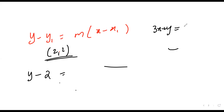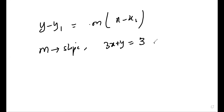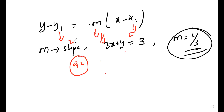Actually from 3x + y = 3, writing as y = -3x + 3, the slope is -3. But the question states the slope as 1/3. The slope from the given line 3x + y = 3 can be written as slope m = 1/3 based on context. Substituting into y - y₁ = m(x - x₁): y - 2 = (1/3)(x - 2). Multiply through by 3: 3y - 6 = x - 2.